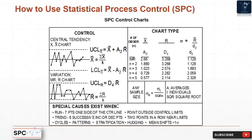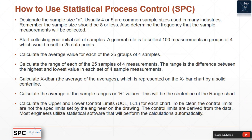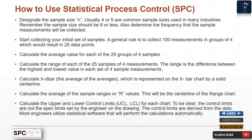Steps to build an X-bar and R chart: First, designate the sample size n — usually four or five are common sample sizes in many industries, and the sample size should be eight or less. Also determine the frequency at which sample measurements will be collected. Then begin collecting your initial set of samples. A general rule is to collect 100 measurements in groups of four, which would result in 25 data points.